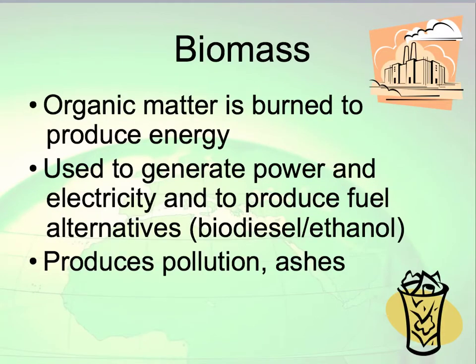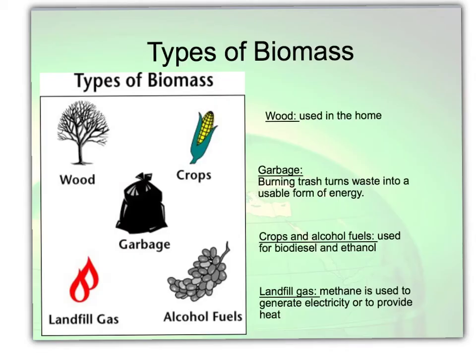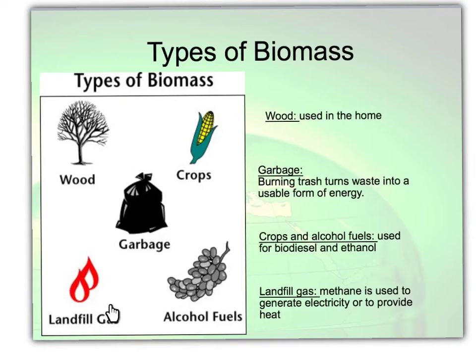Biomass is where we burn organic matter to produce energy. It is used to generate power and electricity and to produce fuel alternatives like biodiesel or ethanol. However, it does produce some pollution and ashes. Types of biomass include wood used in the home, garbage — they burn trash to turn waste into usable energy — corn and other alcohol fuels used for biodiesel, and landfill gas or methane used to generate electricity or provide heat.